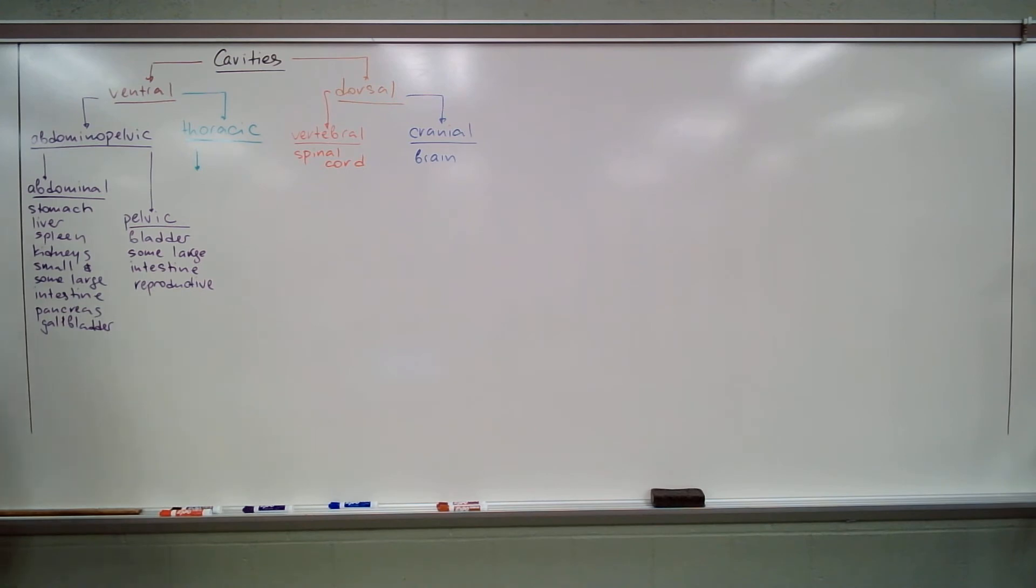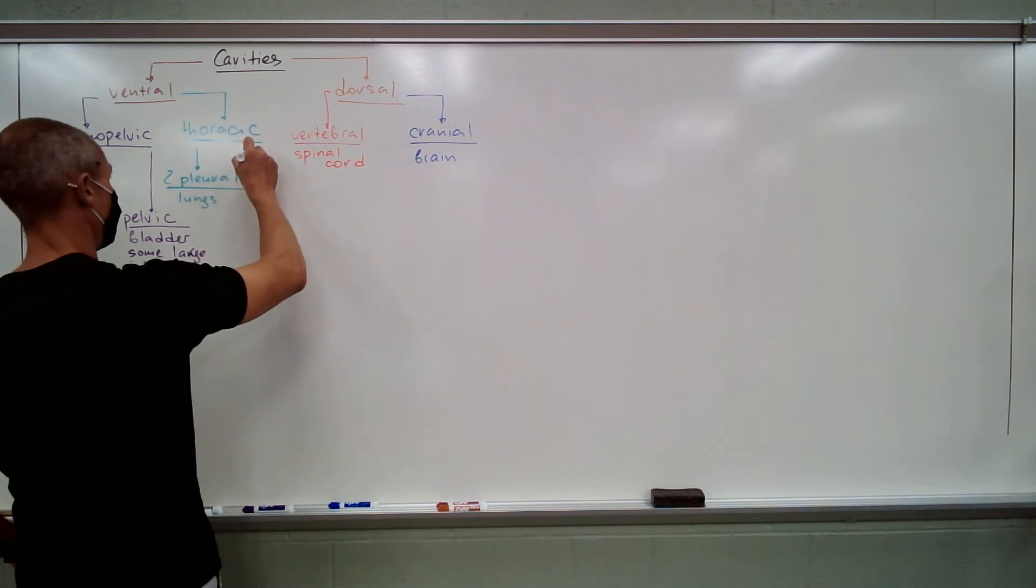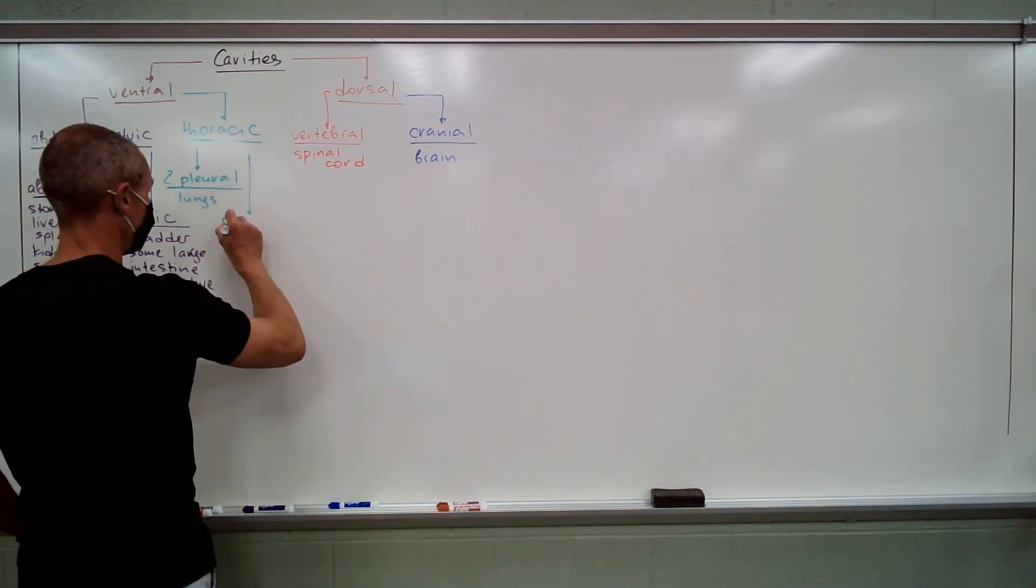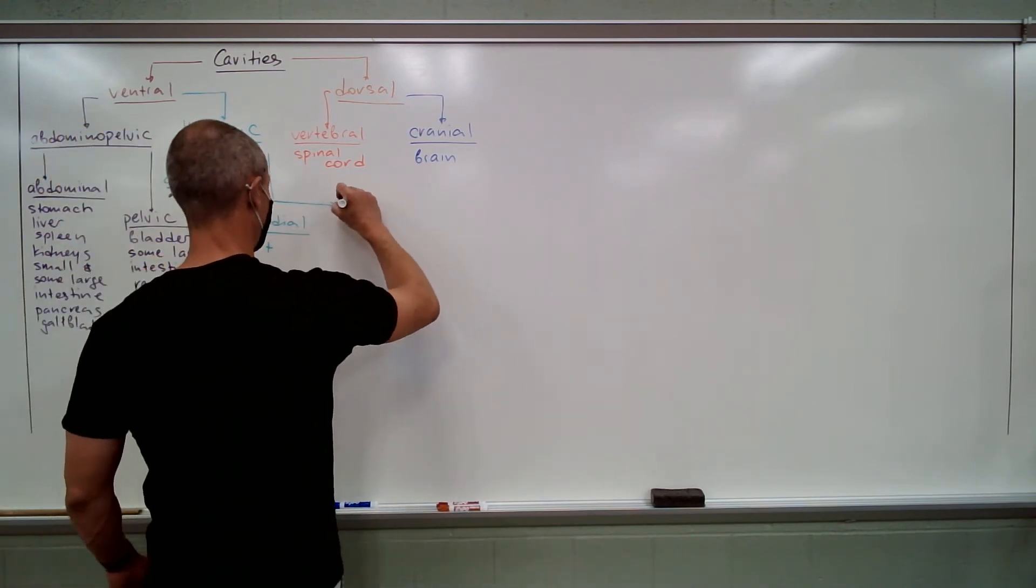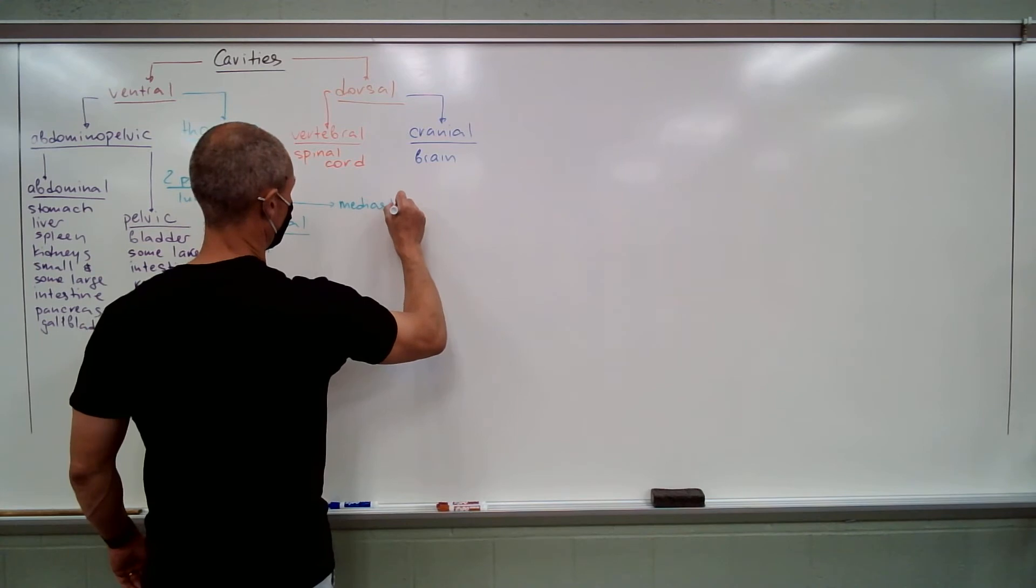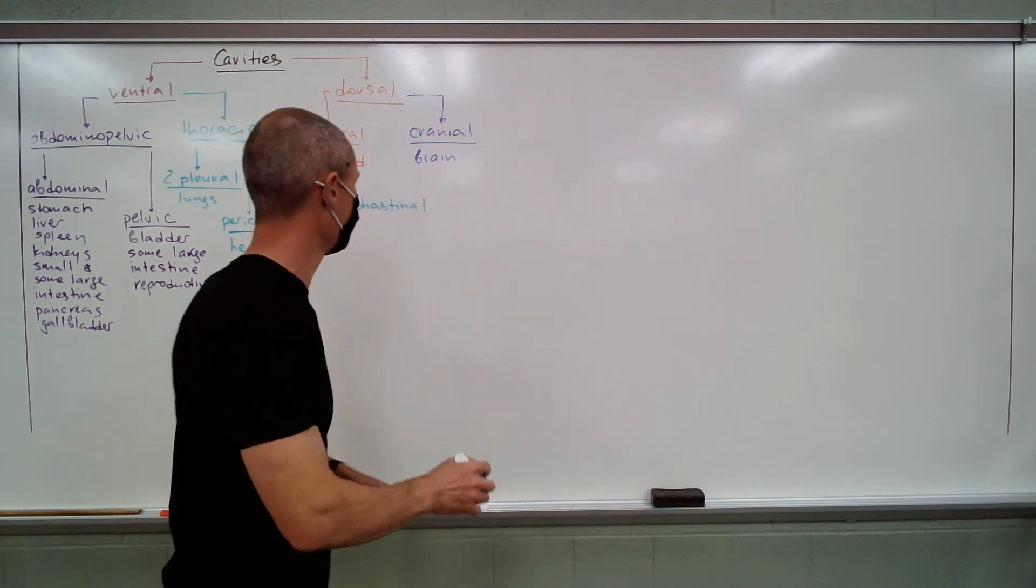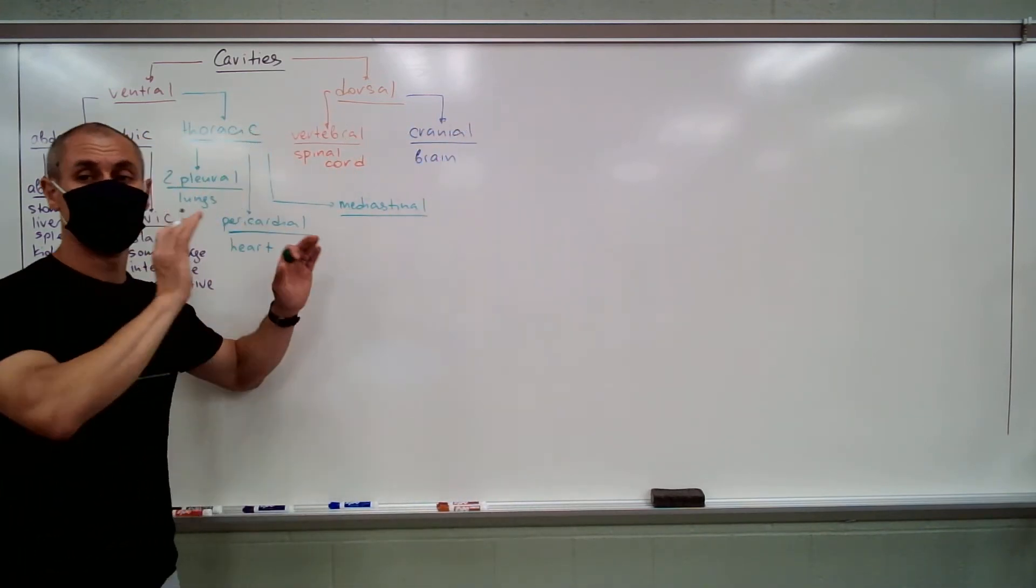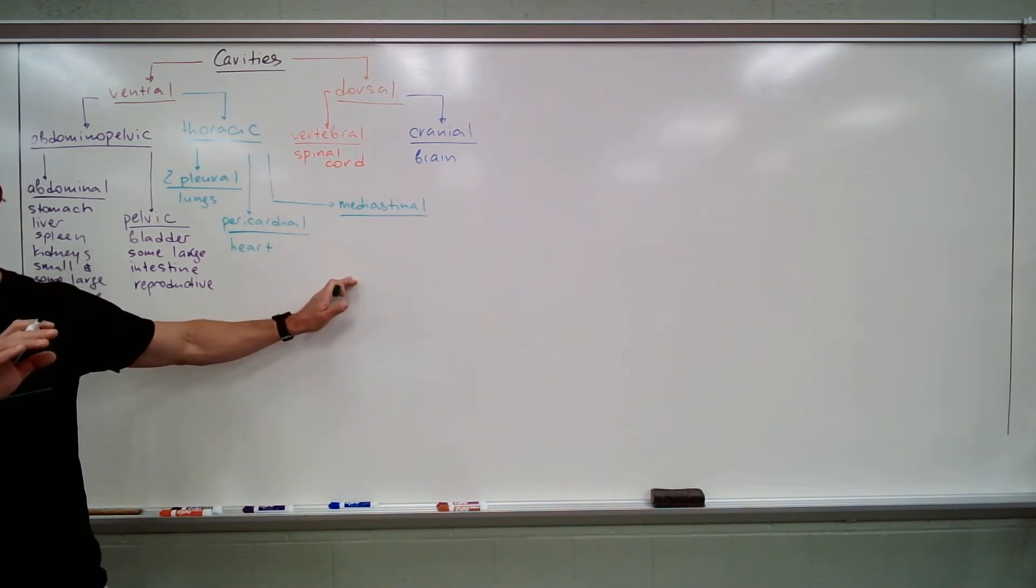So, if you try to convince me that your stomach is in your pleural cavity, we're not getting there. Very, very simple stuff. Now, thoracic. Divided into four cavities. So, we have two pleural cavities for lungs, we have pericardial for the heart, and we have mediastinal.